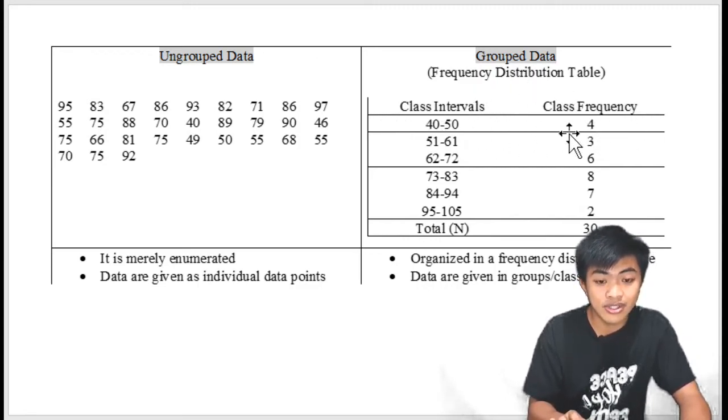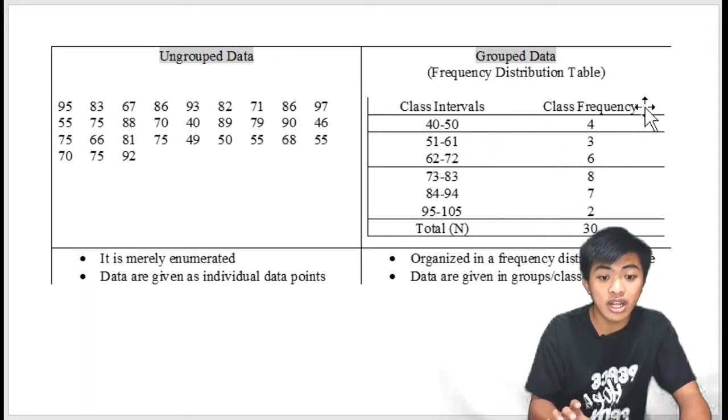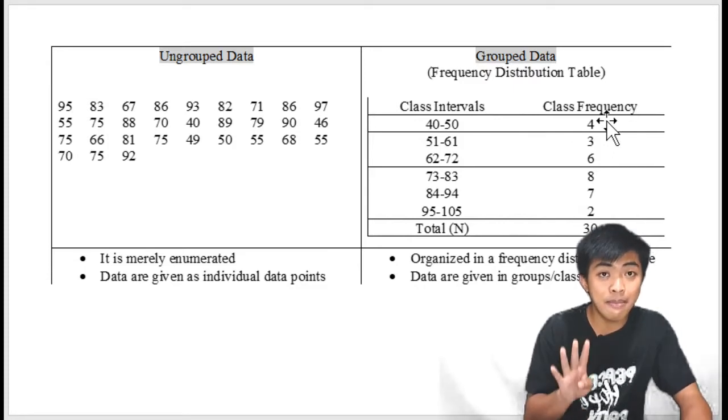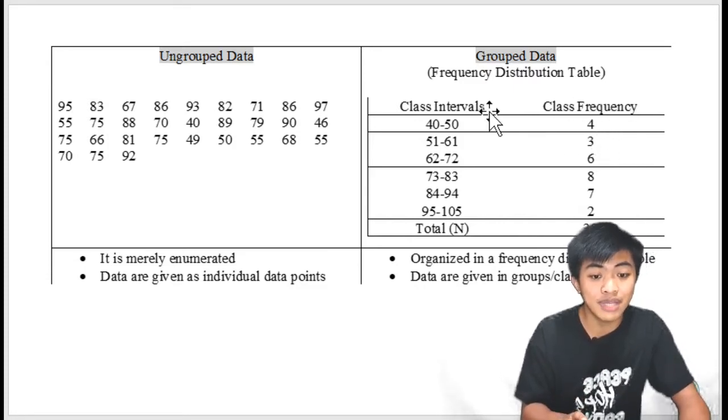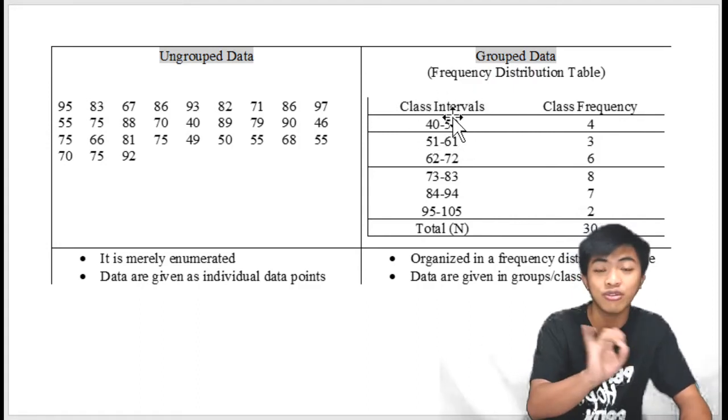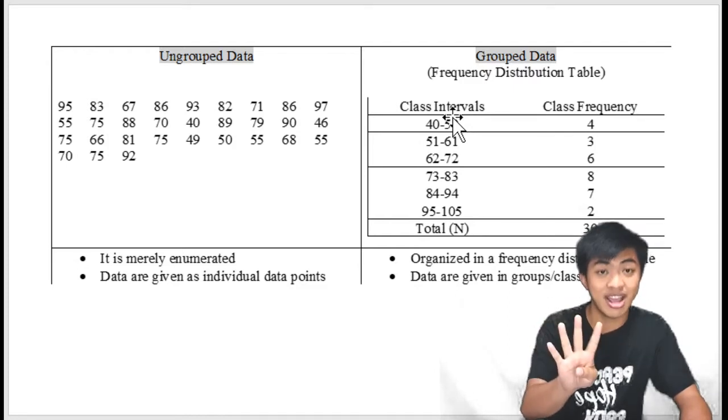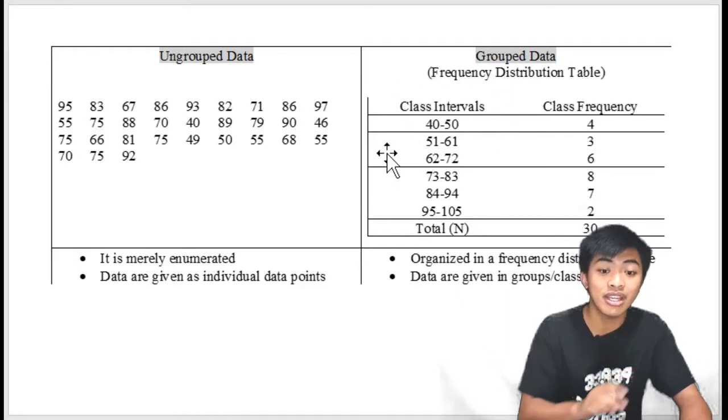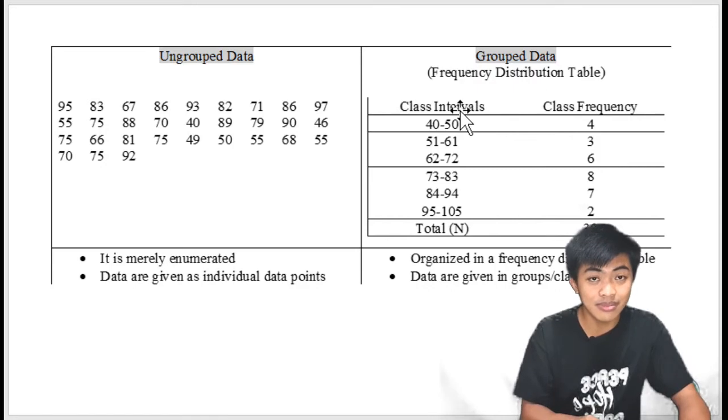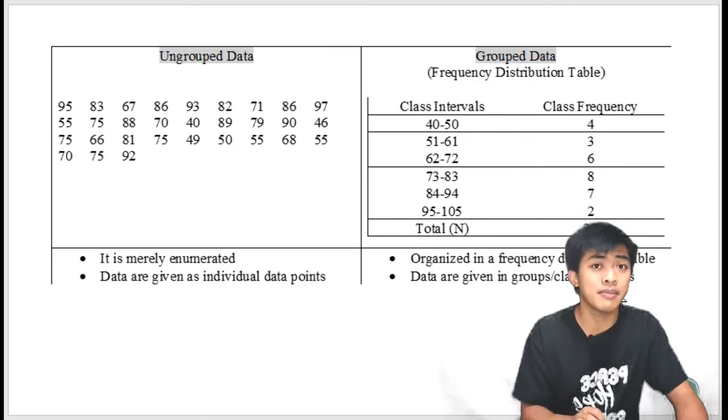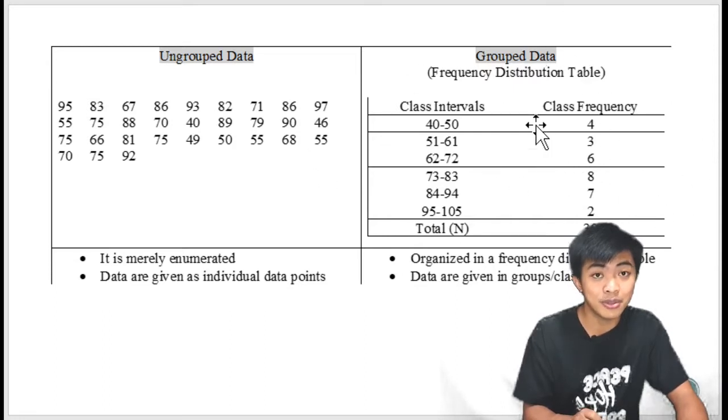So, kung titindan nyo dito, sa first class natin, yung 40 to 50, meron siyang class frequency na 4. Ang ibig sabihin nun, may apat na numbers na kabilang sa group na 40 to 50. So, maybe we have here 40, 41, 45, 49. May apat na number na kabilang dito. Ganon ang grouped data. So sometimes, we will also be dealing with grouped data.